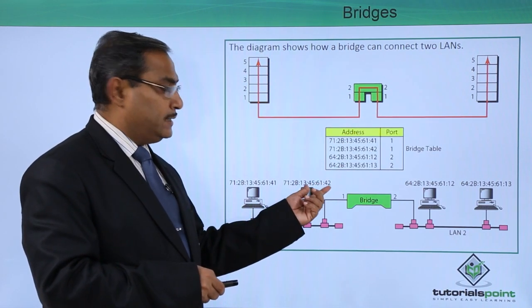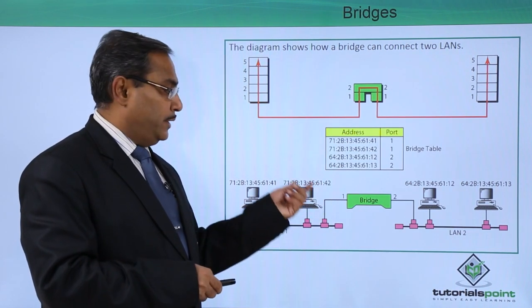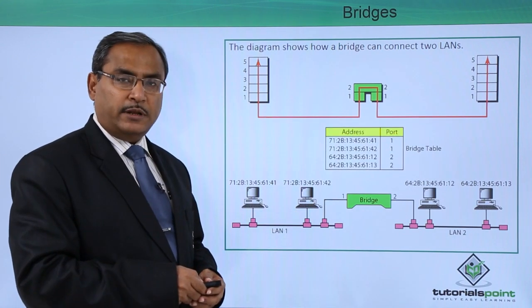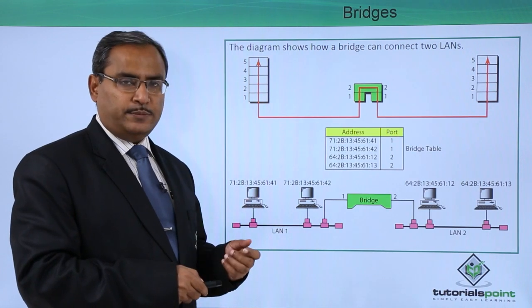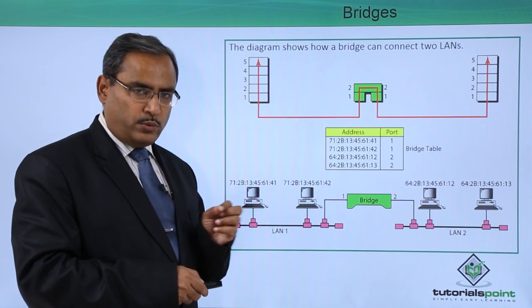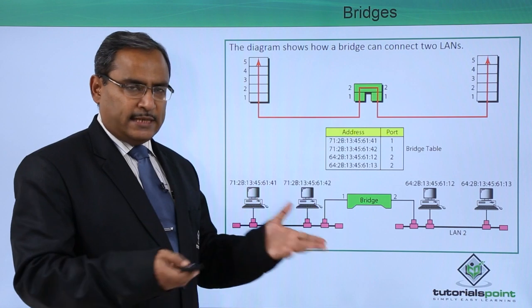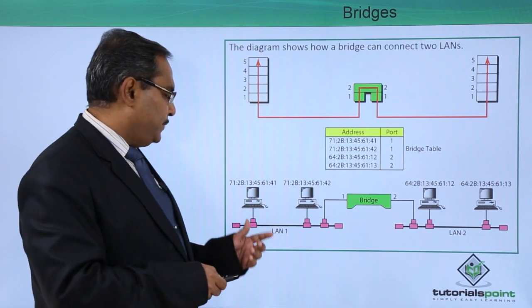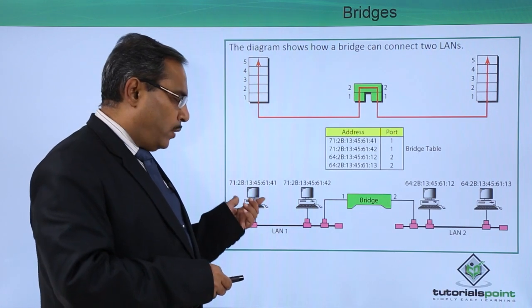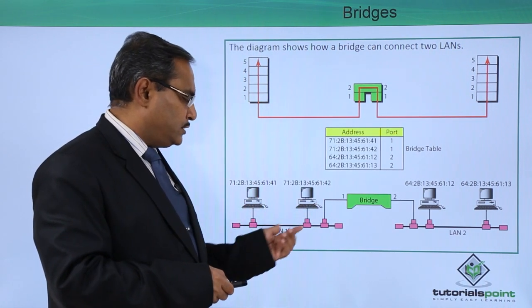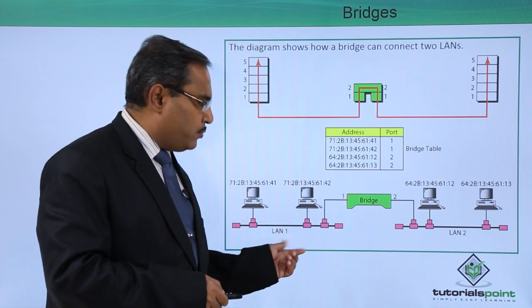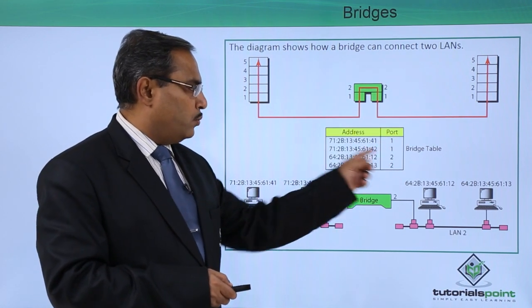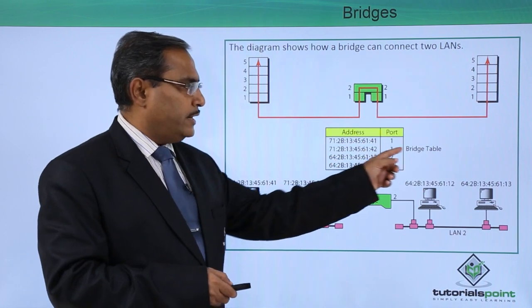That means we are having 6 bytes. It is having 40-bit MAC address. As they have been expressed in hexadecimal, 8 bits in hexadecimal will be represented by 2 hexadecimal digits, as each hexadecimal digit represents 4 bits. This is our MAC address for one station, MAC address for another station for LAN 1. LAN 1 is connected with port number 1, so for port number 1, these two MAC addresses are written in the bridge table.